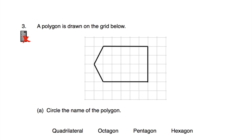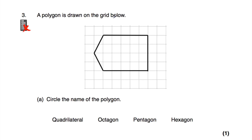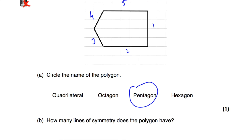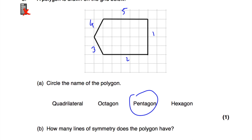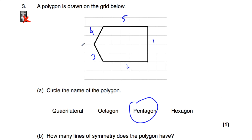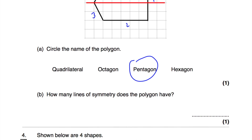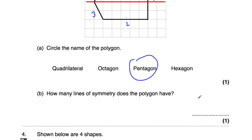Question number 3: a polygon is drawn on the grid. Part A says circle the name of the polygon. Counting the sides — 1, 2, 3, 4, 5 — that polygon has 5 sides, which means it's a pentagon. Part B asks how many lines of symmetry the polygon has. This polygon has one line of symmetry — a horizontal line of symmetry. The answer is 1.